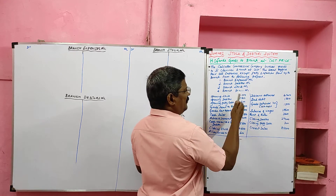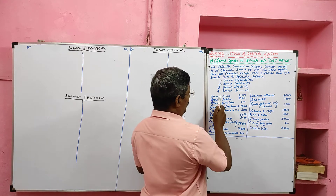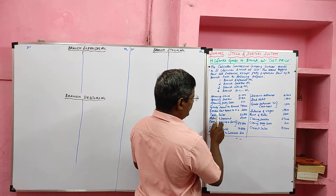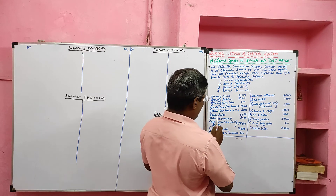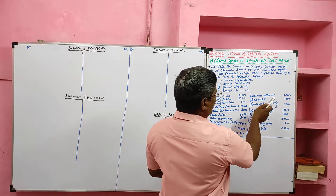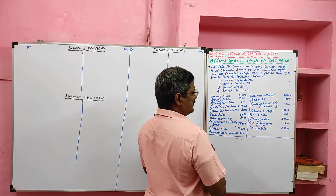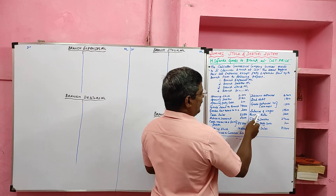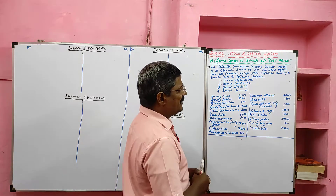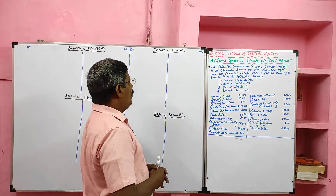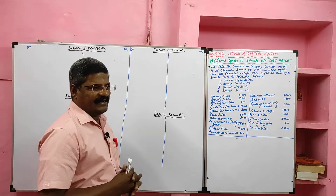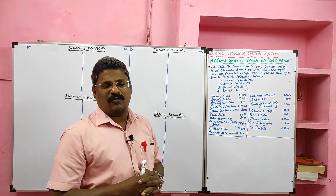From the following information, prepare: Branch Expenses Account, Branch Debtor Account, Branch Stock Account, and Branch Profit and Loss Account. The given information includes: opening stock, opening debtors, opening petty cash, goods sent to branch, goods returned to head office, cash sales, advertisement, cash received from debtors, closing debtors, allowance to customers, discount allowed, bad debts, goods returned by customers, salary and wages, rent and rates, closing petty cash, and credit sales.